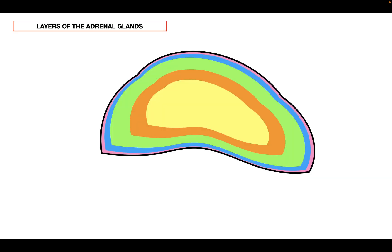Before we talk about the steps in the synthesis of cortisol, let's first remind you of the different layers that we find in the adrenal glands. The first layer is going to be the capsule, represented by this pink layer on this diagram. The capsule is connective tissue that surrounds the entire exterior of the adrenal gland.